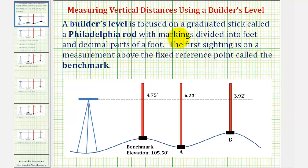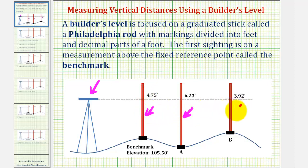A builder's level is focused on a graduated stick called a Philadelphia rod with markings divided into feet and decimal parts of a foot. In our diagram, this is the builder's level and we actually have three red Philadelphia rods: one, two, and three. The first sighting is on a measurement above a fixed reference point called the benchmark.